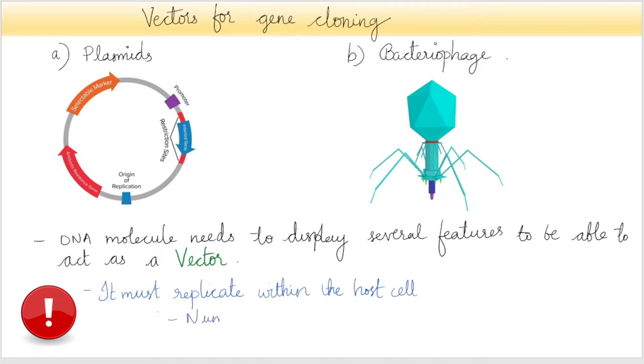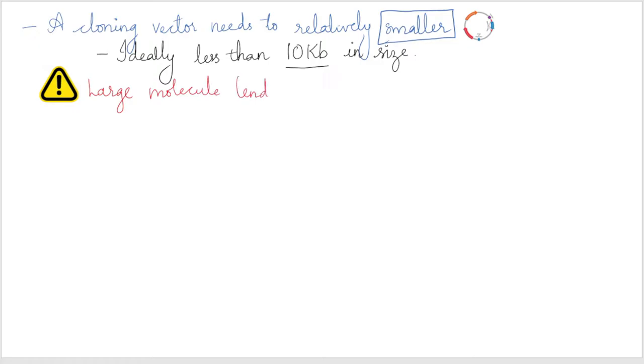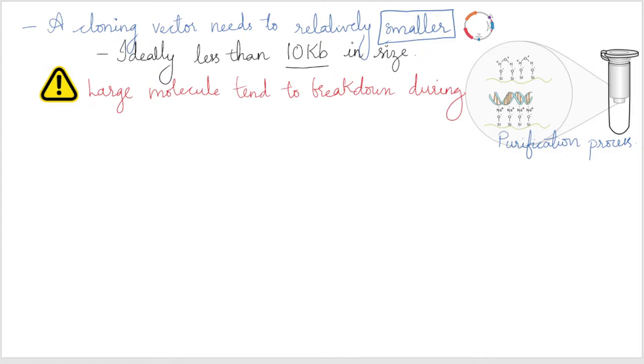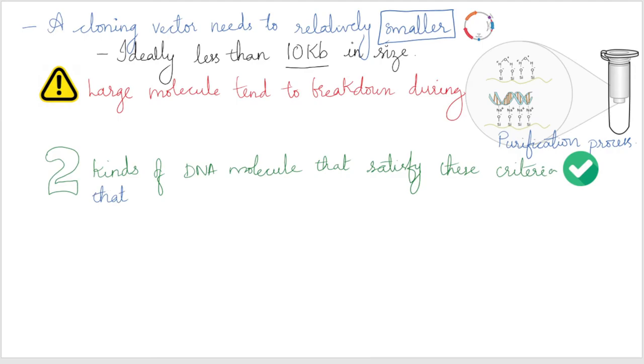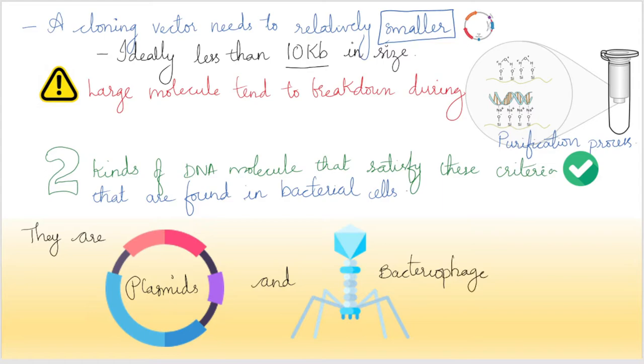Most importantly, it must be able to replicate within the host cell so that numerous copies of the recombinant DNA molecule can be produced and passed to the daughter cells. A cloning vector needs to be relatively small, ideally less than 10 kb in size, as large molecules tend to break down during purification and are more difficult to manipulate. Two kinds of DNA molecules that satisfy these criteria can be found in bacterial cells: they are plasmids and bacteriophage chromosomes.